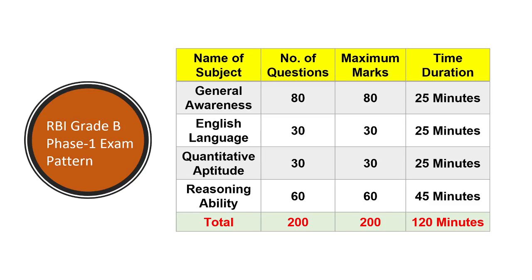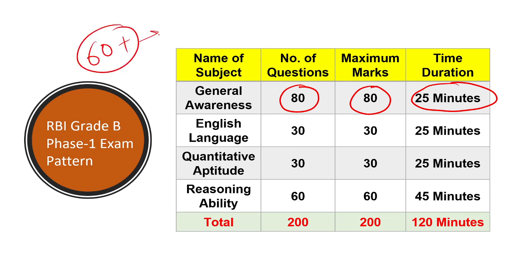In the Phase 1 examination, they ask you 80 questions of 80 marks and give you only 25 minutes to solve them, so you need speed and accuracy to easily score 60 plus. I'll give you the answer on how to score 60 plus in this session. Those who are new to our channel, please subscribe and watch this video till the end, and if you find it useful, share it with your friends.